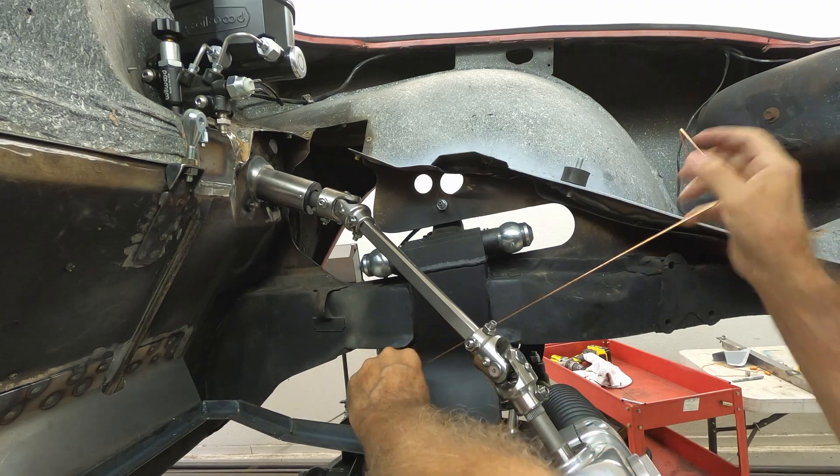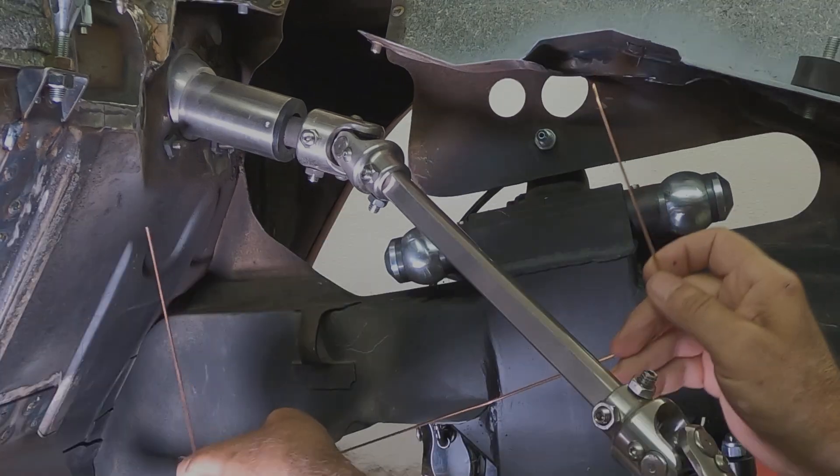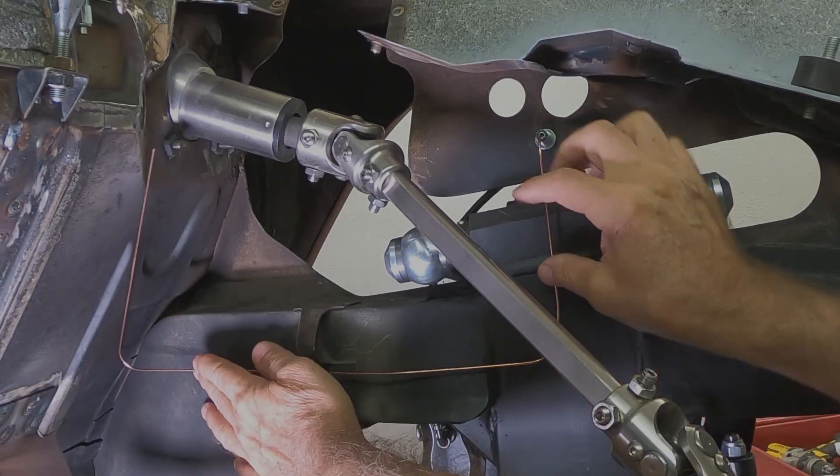After determining the path of the brake line, use heavy wire for the template. I use TIG wire but coat hanger wire would also work. Just make sure it's nice and straight before you start.